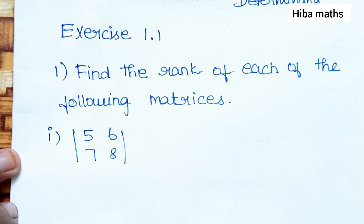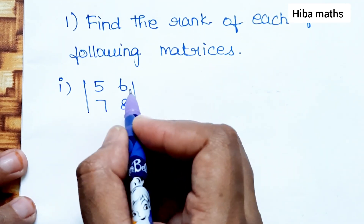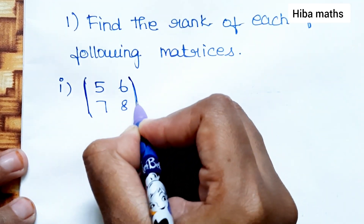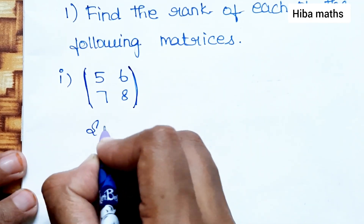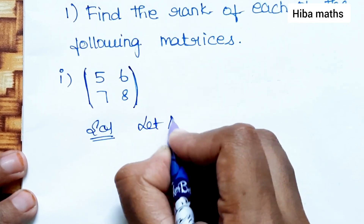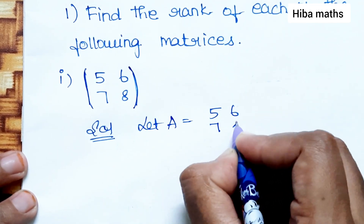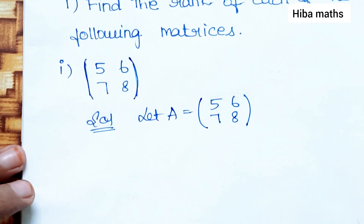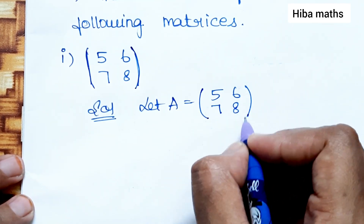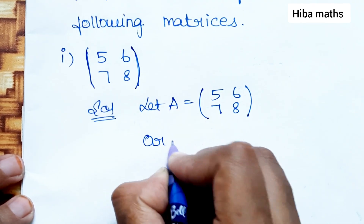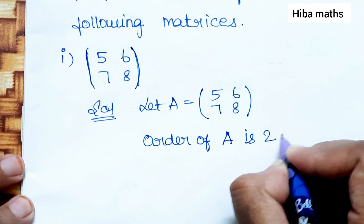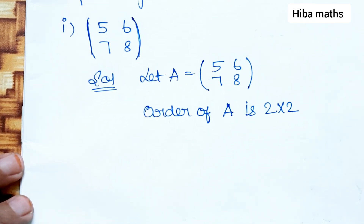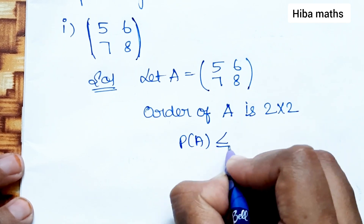Find the rank of each of the following matrices. First matrix is [5, 6; 7, 8]. Let A equal to [5, 6; 7, 8]. The order is 2 rows and 2 columns, so the order of A is 2 by 2. Therefore, rank of A is less than or equal to 2.